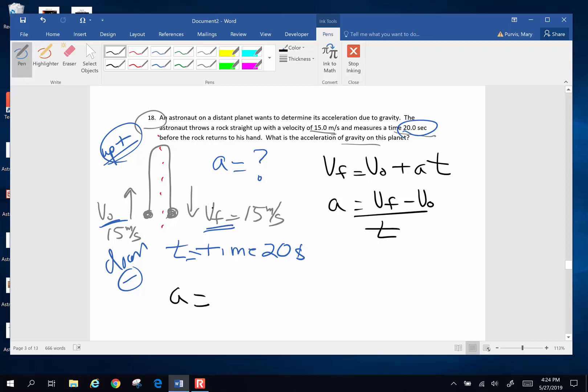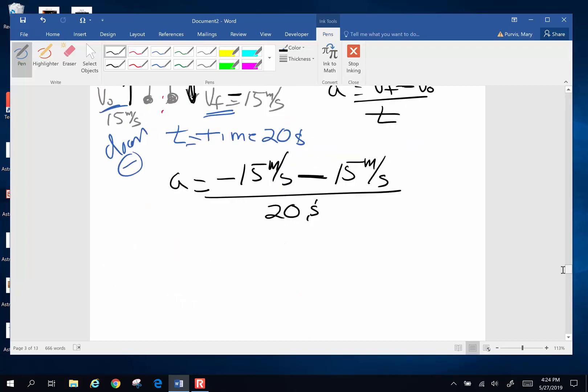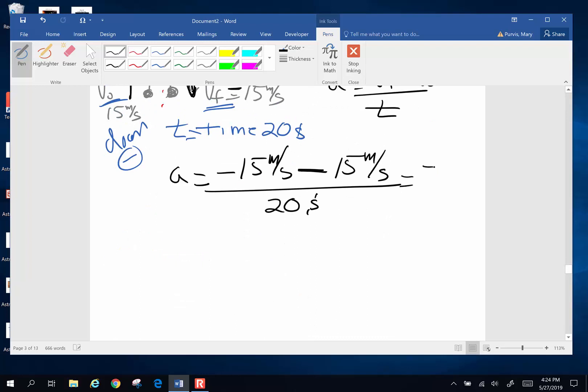Final velocity is down, so this is going to be a negative 15 meters per second. Minus the original velocity, which is up, which is a positive 15 meters per second. But where does that negative sign come from? The equation itself, divided by my 20 seconds of flight time. So I am going to end up with 30, negative 30, divided by 20. And I end up with an acceleration of 30 divided by 20. I end up with an acceleration of a negative 1.50, if we carry everything to 3 sig figs.